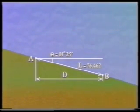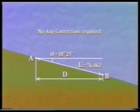The first step is to decide which corrections are necessary. In this case, the only one that does not apply is the sag correction, because the tape was laid along the ground surface.